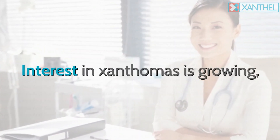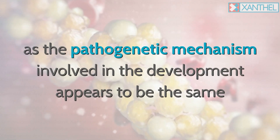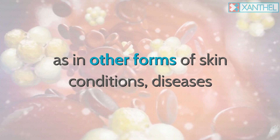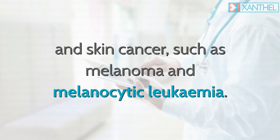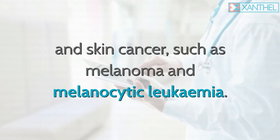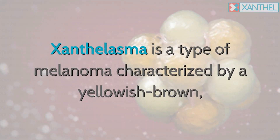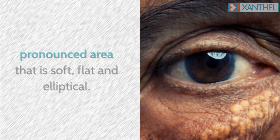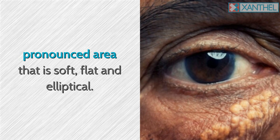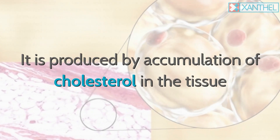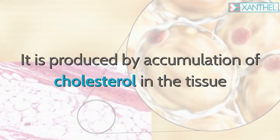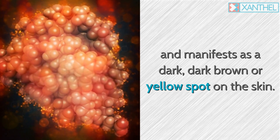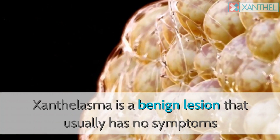Interest in xanthomas is growing as the pathogenetic mechanisms involved in their development appear to be the same as in other forms of skin conditions, diseases, and skin cancer such as melanoma. Xanthalasma is characterized by a yellowish-brown pronounced area that is soft, flat, and elliptical, produced by accumulation of cholesterol in the tissue, manifesting as a dark brown or yellow spot on the skin.